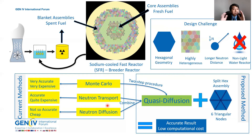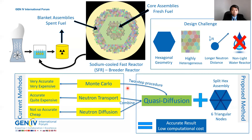What I did in my research is combine neutron transport and neutron diffusion into what is called the quasi-diffusion method. In this method, I implemented a two-step procedure, using a simplified Monte Carlo model to homogenize the reactor, extract data, and then feed that into the quasi-diffusion code. To handle the hexagonal geometry, I split each hex geometry into six triangular nodes, because triangles are much simpler — with only three surfaces and three corner points — allowing accurate results with low computational cost.